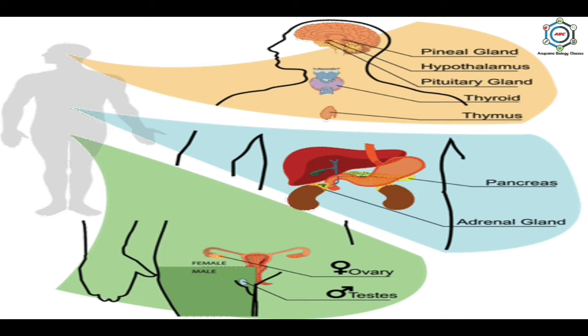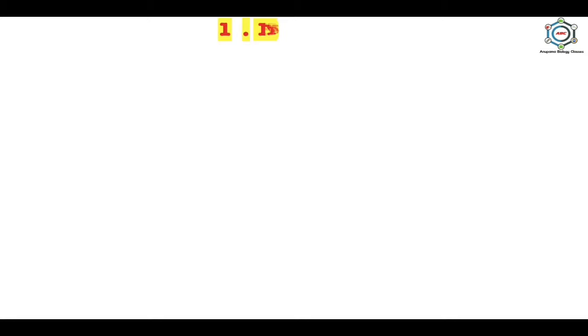In the following account we will discuss the structure, secretion, function, and disorders of various endocrine glands. In the picture, you can see all the endocrine glands and their location in the body: pineal, pituitary, and hypothalamus are in the brain; thyroid is in the neck region; thymus is in the chest region; pancreas is in the abdomen below the stomach; adrenal is on the kidneys; and testes and ovaries, in male and female respectively, are responsible for various hormone secretions.